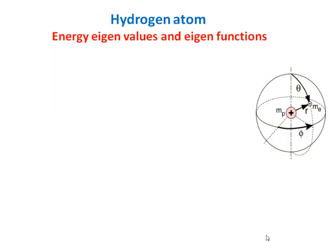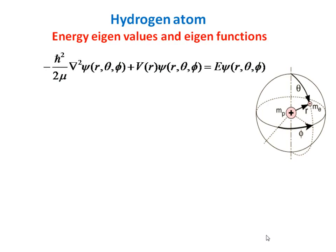Now the next example is a hydrogen atom. As we know, a hydrogen atom consists of a proton and an electron. In the figure you can see the instantaneous position of the electron with respect to the proton, which is at the origin of the coordinate system. Here the wave function of this system is written as a function of the spherical polar coordinates. This is the Schrödinger wave equation for the system, where V(r) is the Coulomb potential equal to −e² / (4πε₀r), and μ is the reduced mass of the system, nearly equal to the mass of the electron.